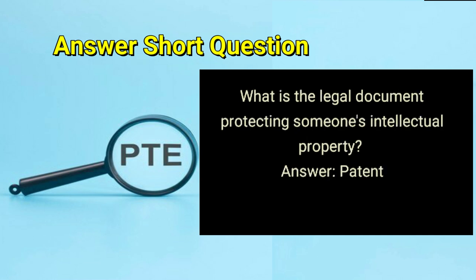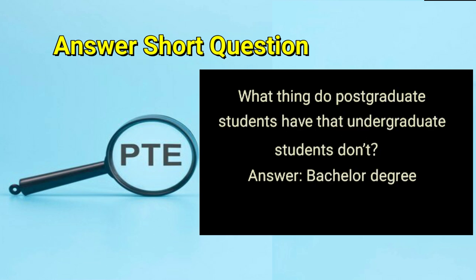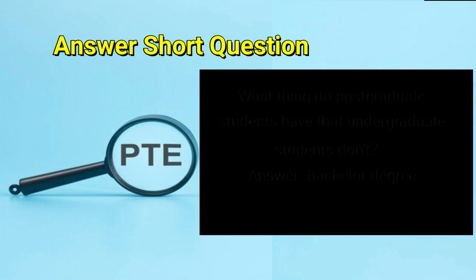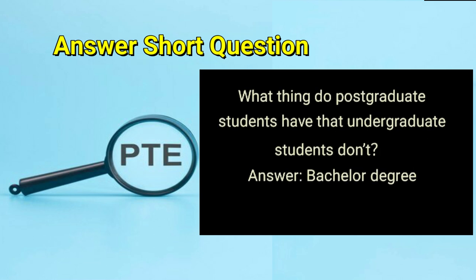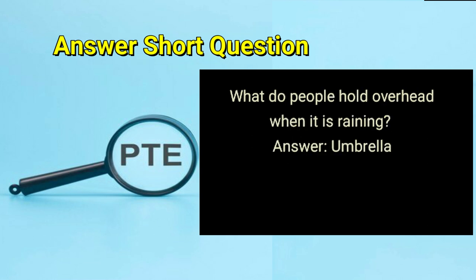What is the legal document protecting someone's intellectual property? Answer: patent. What thing do postgraduate students have that undergraduate students don't? Answer: bachelor degree. What do people hold overhead when it is raining? Answer: umbrella.